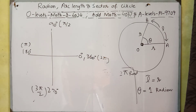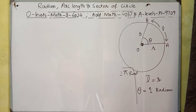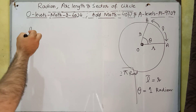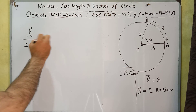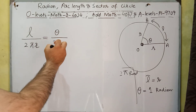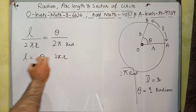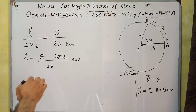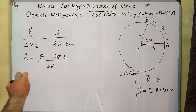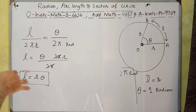We can also derive a relation between arc length l and angle theta. The ratio of arc length l to total arc length 2πr equals the ratio of angle theta to the total angle 2π radians. Simplifying this, we get l equals rθ. This is the fundamental relationship between arc length, radius, and angle. Make sure that when using this relationship, the angle must be in radians.